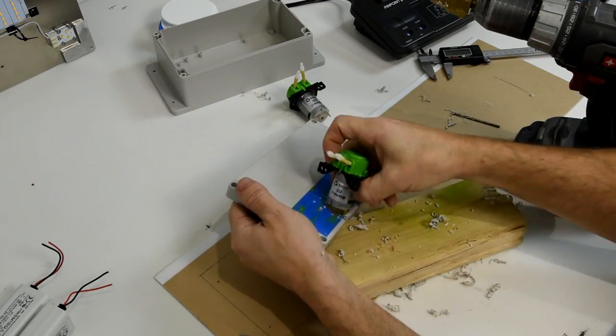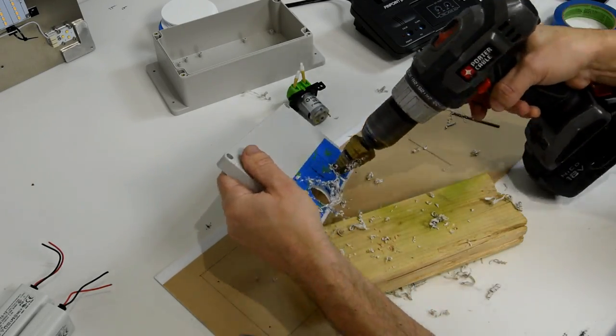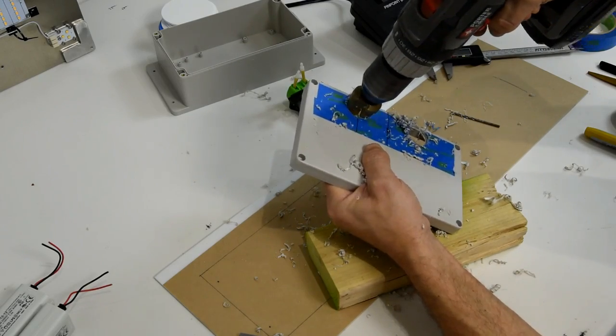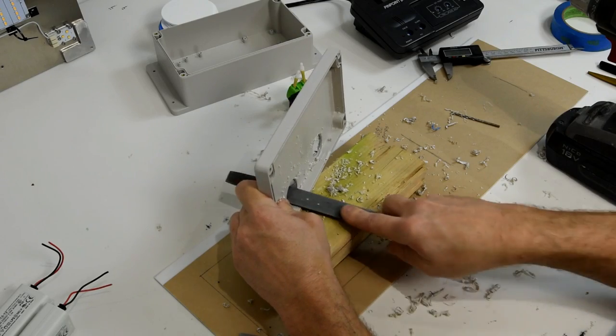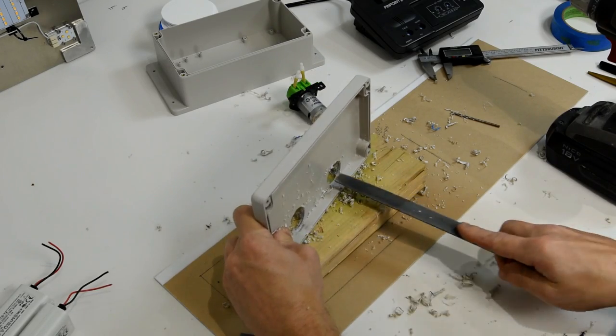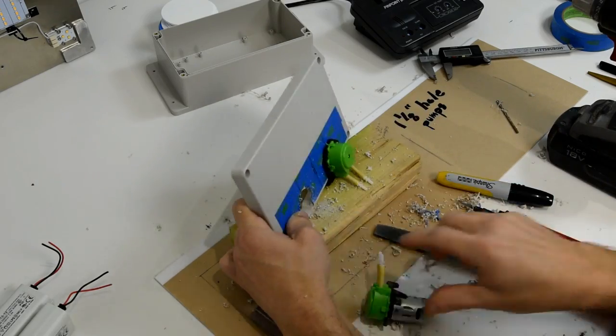You can buy these from Harbor Freight, about 20 bucks for a three pack, but I find them to be indispensable. I'm marking here as a depth guide so I don't go too deep. With the proper size holes drilled, I like to keep a file around just to file the plastic. I drilled a little smaller than an inch and an eighth and used a file to clean up the edges and make sure the peristaltic pumps fit perfectly.